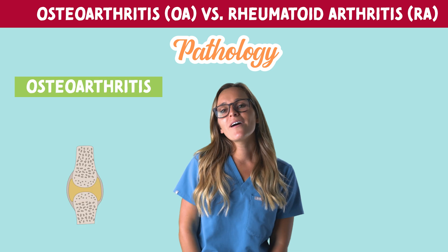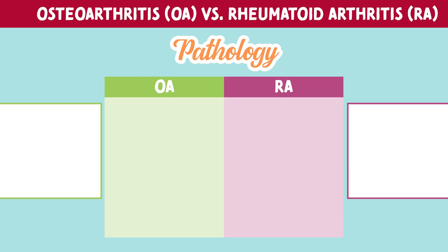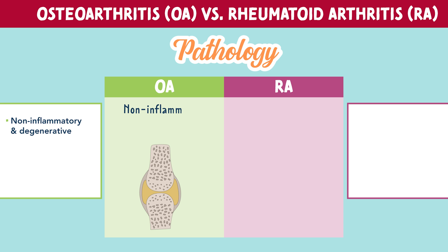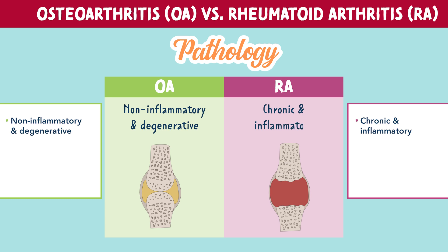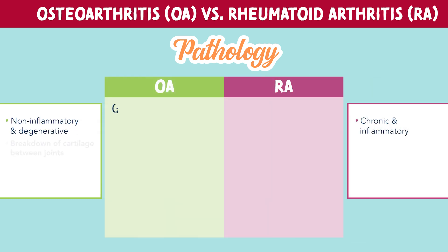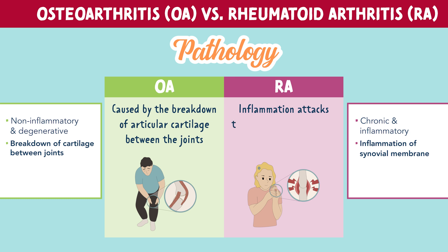OA is a non-inflammatory degenerative joint disorder, while RA is chronic and inflammatory. OA is caused by the breakdown of articular cartilage between the joints. Where RA, we have that inflammation which attacks the synovial membrane and destroys connective tissue.